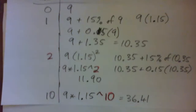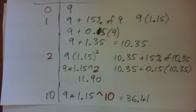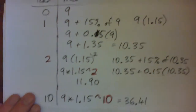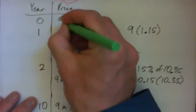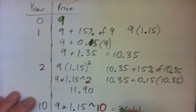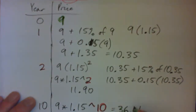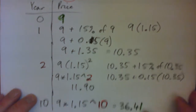Back to the question: if journal prices had increased by 15% each year, what percentage increase would that give over 10 years? So what is the percentage increase if the price starts at nine dollars and ten years later becomes $36.41?